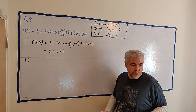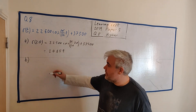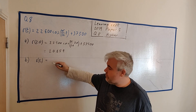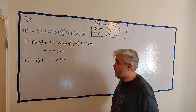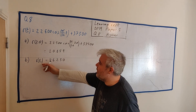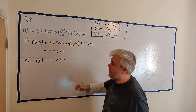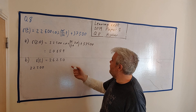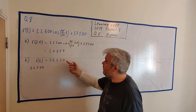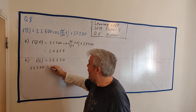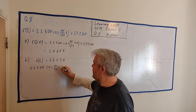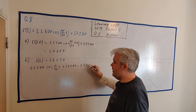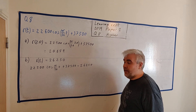Part b tells us we're looking for the two values of t when the revenue equals 26,250. It's a straightforward equation: the revenue function equals 26,250. So we set up 22,500 cosine(π/26 · t) + 37,500 = 26,250. Let's start rearranging.